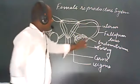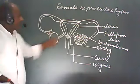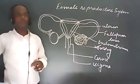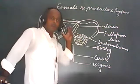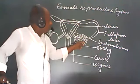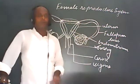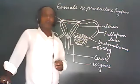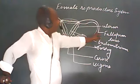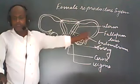When the ovum is released from the ovary, it reaches the fallopian tubes. In the fallopian tubes there are finger-like structures called fimbria. The function of fimbria is to catch and hold the ovum which is released from the ovary. When the ovum is caught by the fimbria, it is carried into the fallopian tube where fertilization occurs.